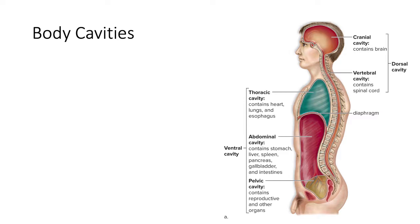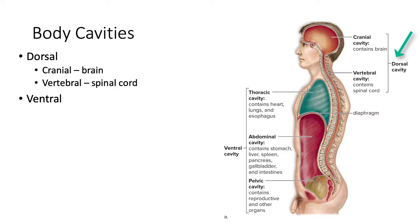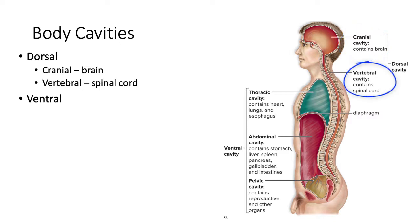There are two main body cavities: the dorsal body cavity and the ventral body cavity. The dorsal cavity is toward the posterior or dorsal side of the body and it contains two more specific cavities — the cranial cavity, which holds the brain, and the vertebral cavity, which houses the spinal cord.